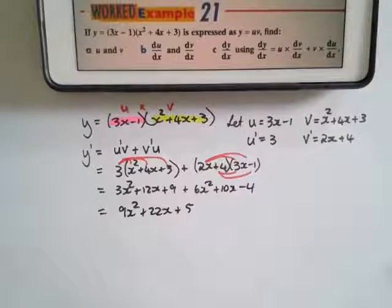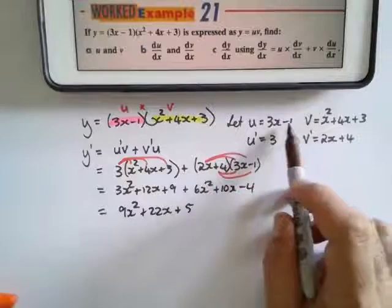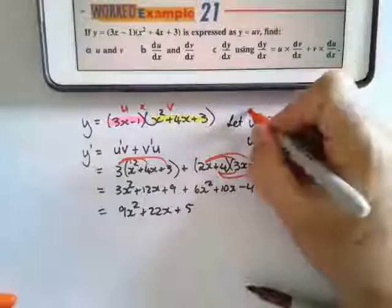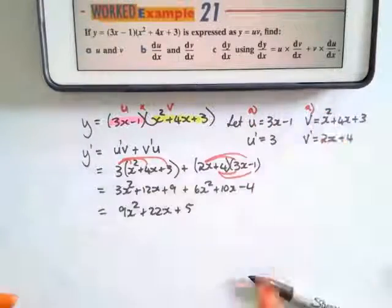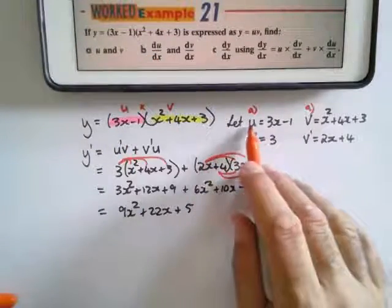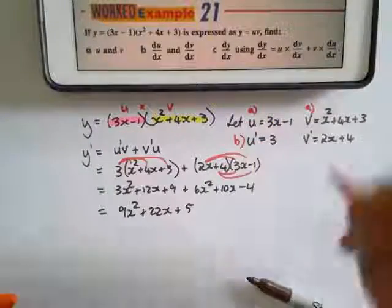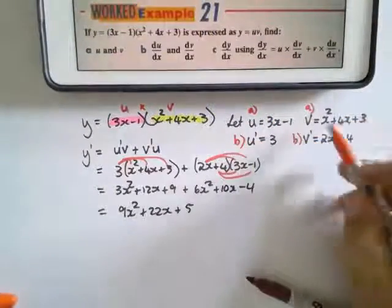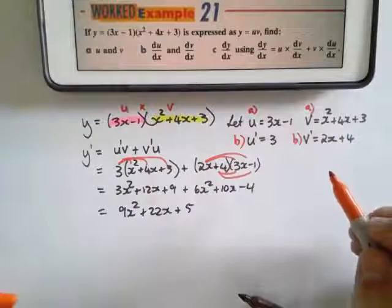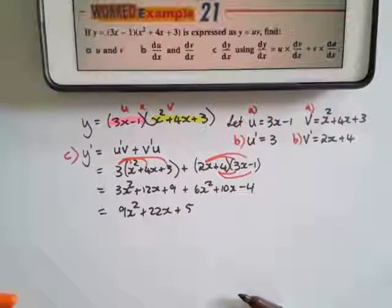How does that relate to the question? Well, we've written u and v—so that's u and that's v—so this is question a. Then b was write du/dx, so this is question b, and that is the other part of question b because that is dv/dx. And then using c, which is this rule, that is how it's relating to the question.